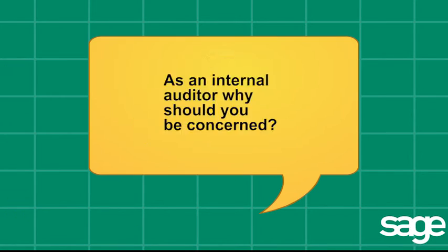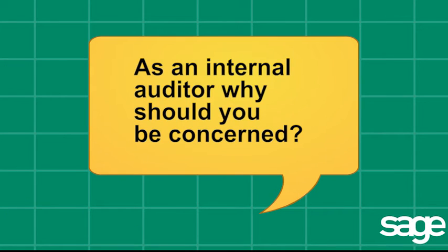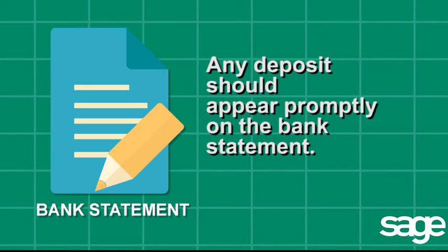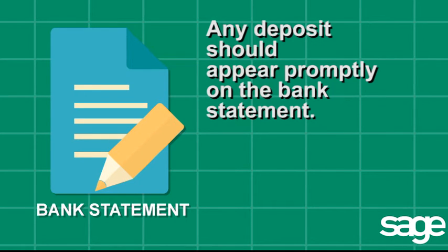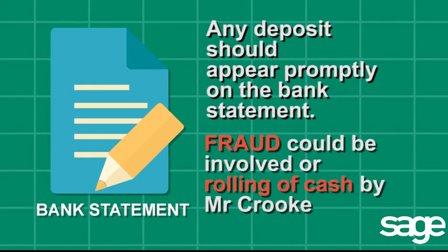As an internal auditor, why should you be concerned? Any deposit should appear promptly on the bank statement. Over two whole months, dishonoured checks or checks with errors should have been identified and rectified with the bank. It is likely that fraud could be involved or rolling of cash by Mr Crook.